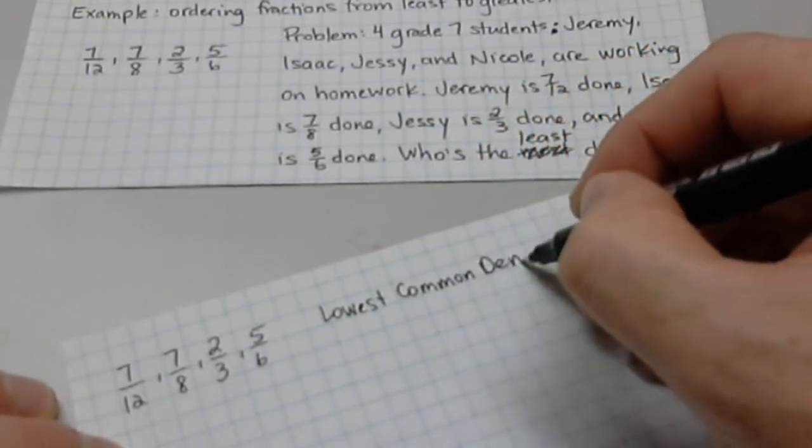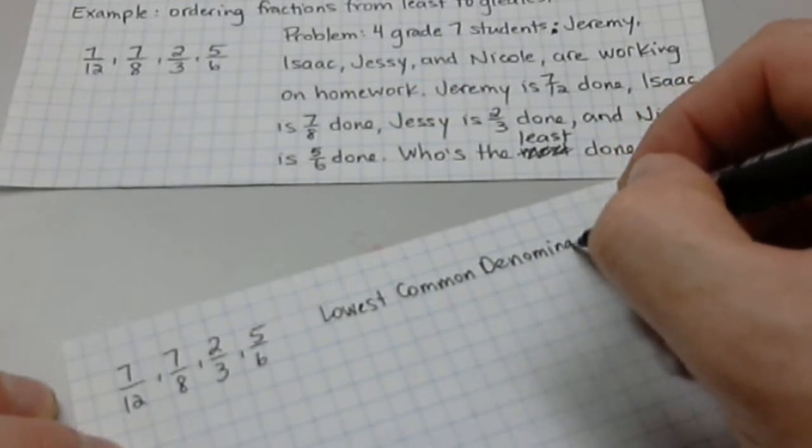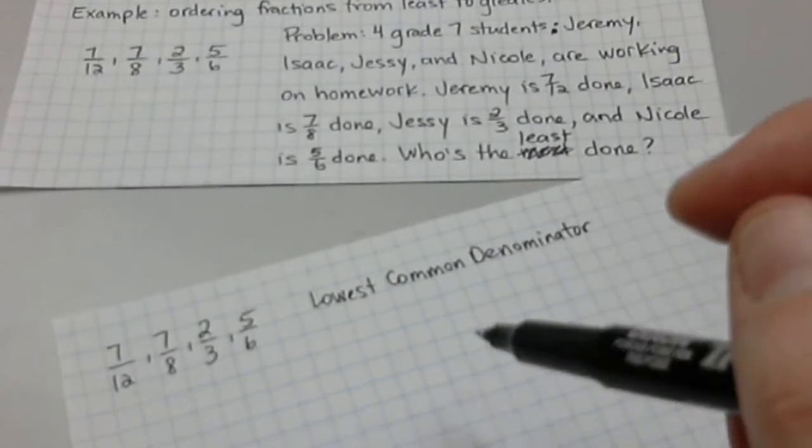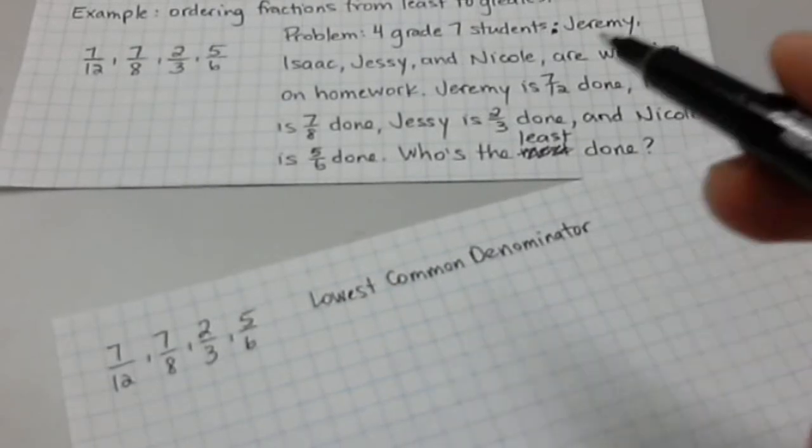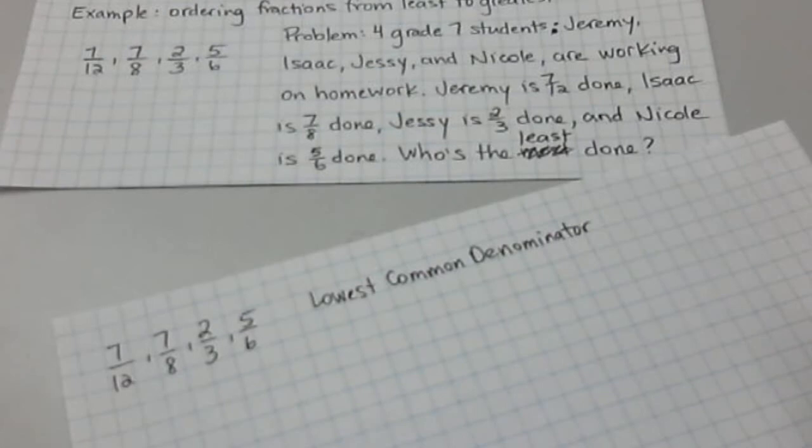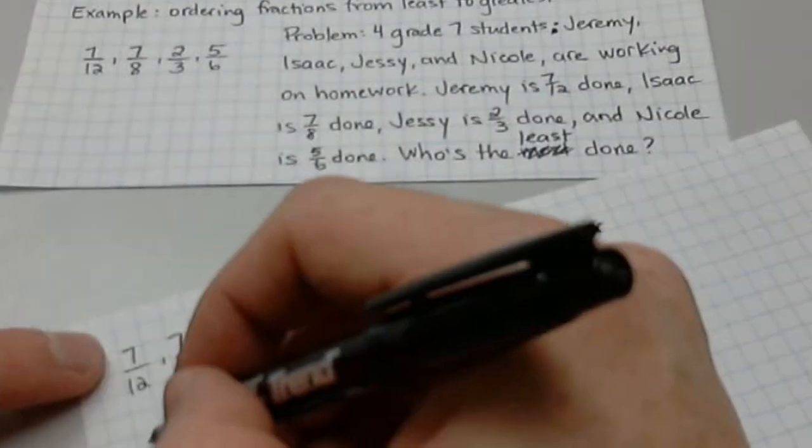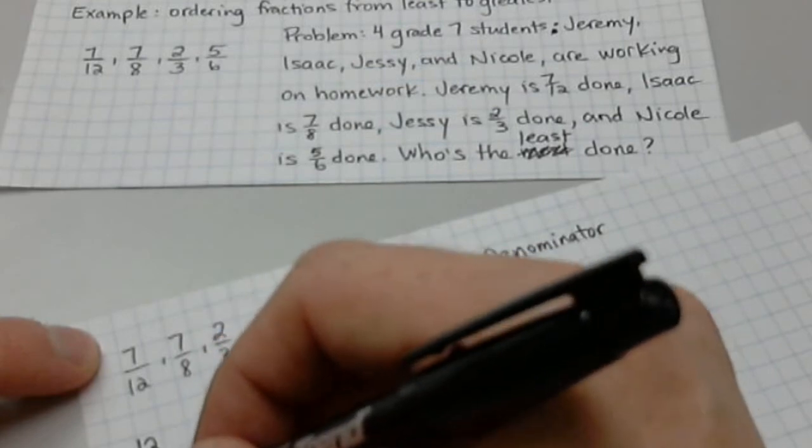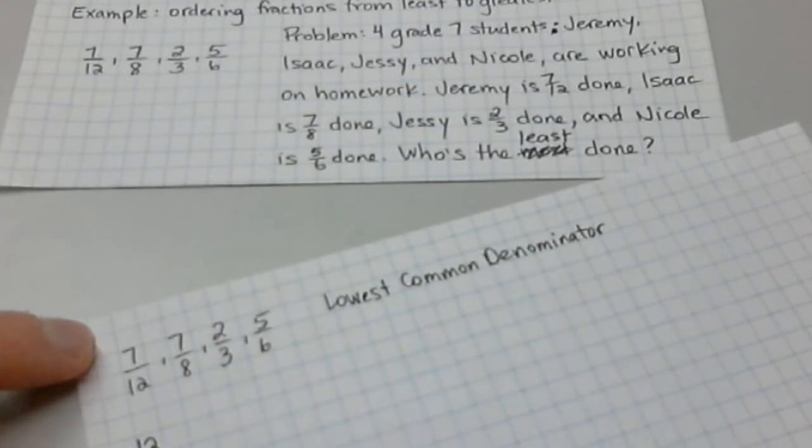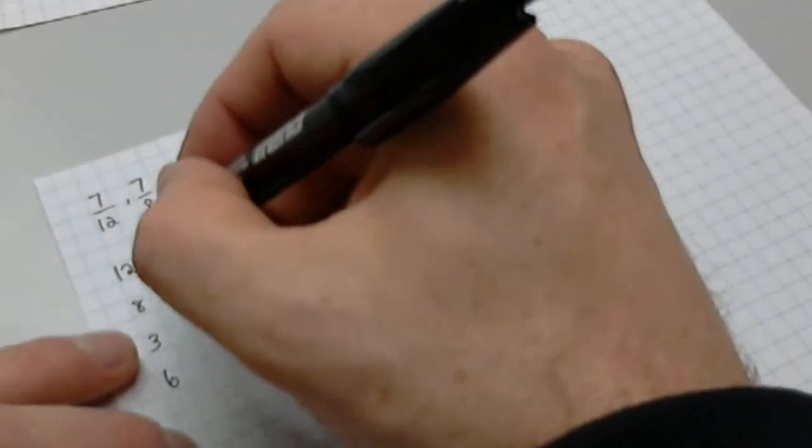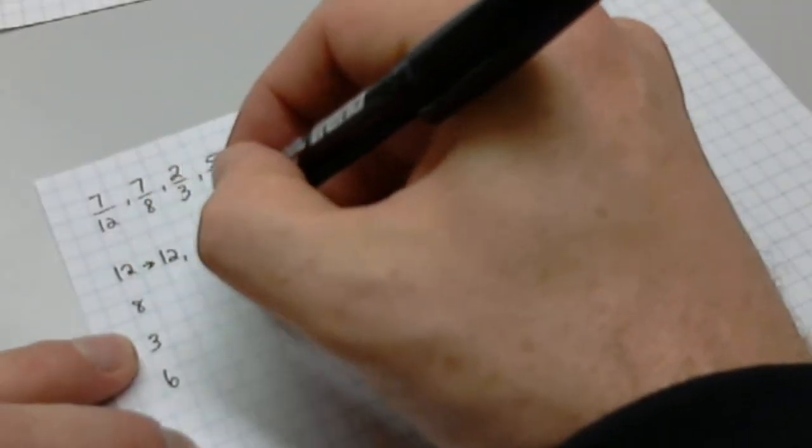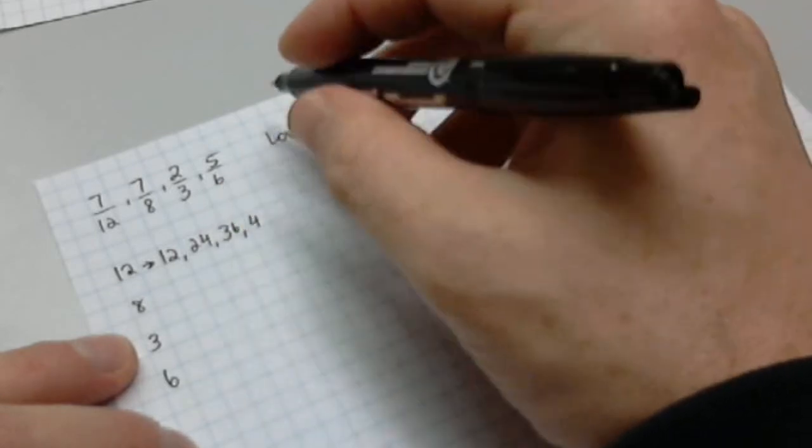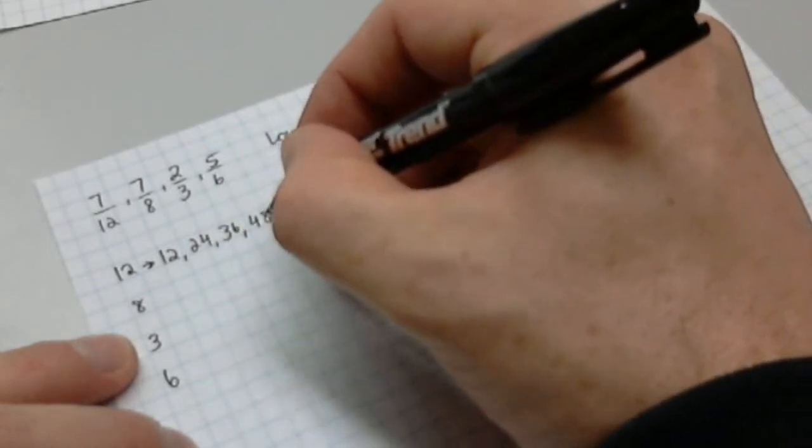Because what we need to find is something called the lowest common denominator. I'm not sure if that's a new topic to you. I seem to recall doing something in the Grade 5 or Grade 6 textbook that had to do with adding and subtracting fractions. So, what we're going to do is write out the denominators, 12, 8, 3, and 6, and I'm going to use this method, just writing out multiples.